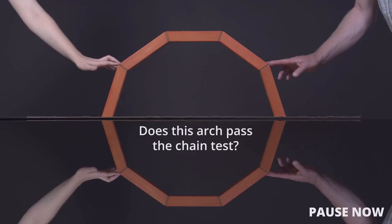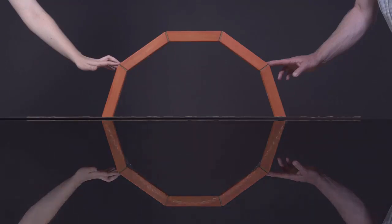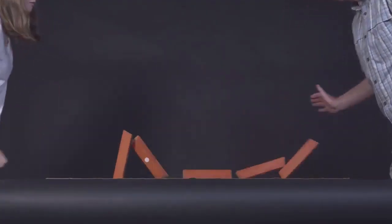Does this thin semicircular arch pass the chain test? It does not, because it is impossible to position a hanging chain so that it lies entirely inside the profile of the arch. And that is why it collapses.